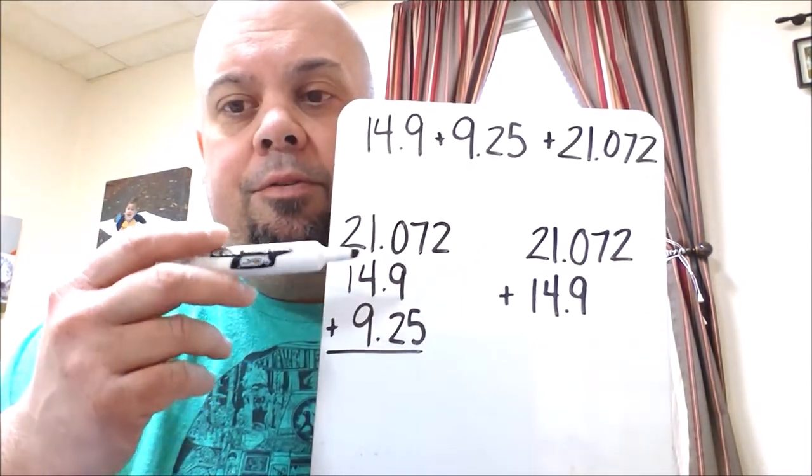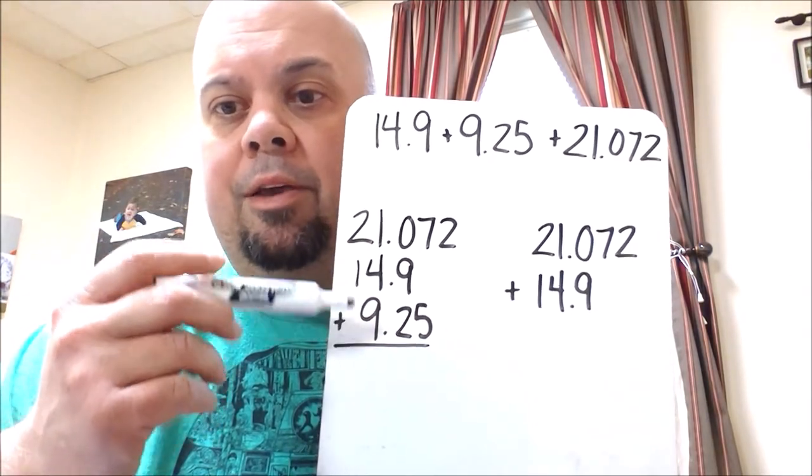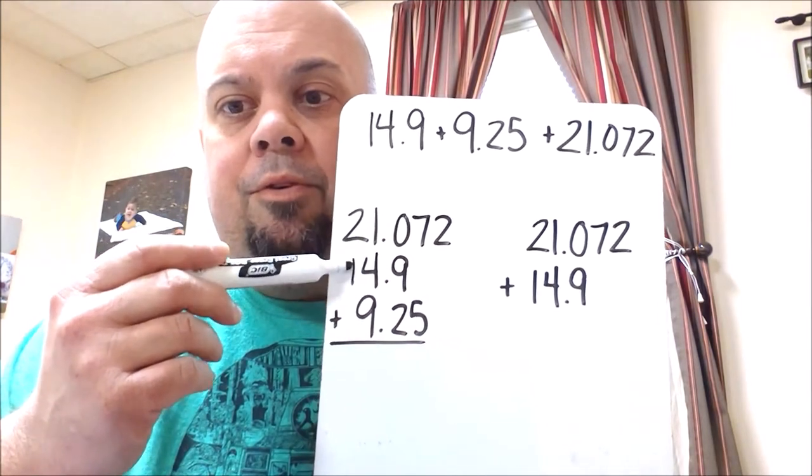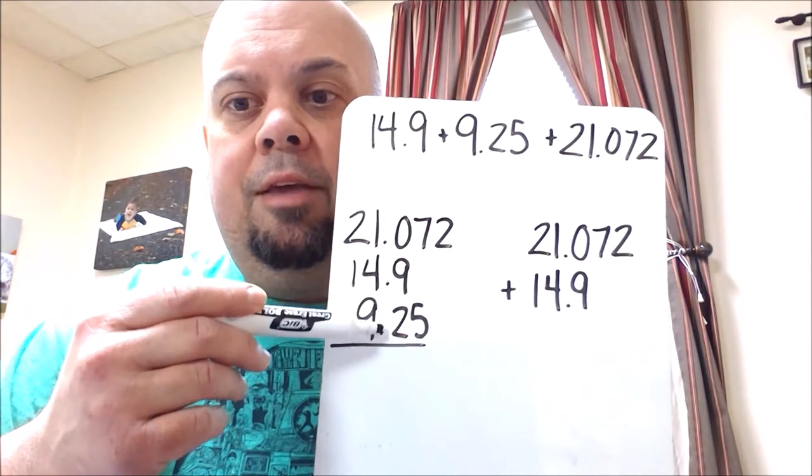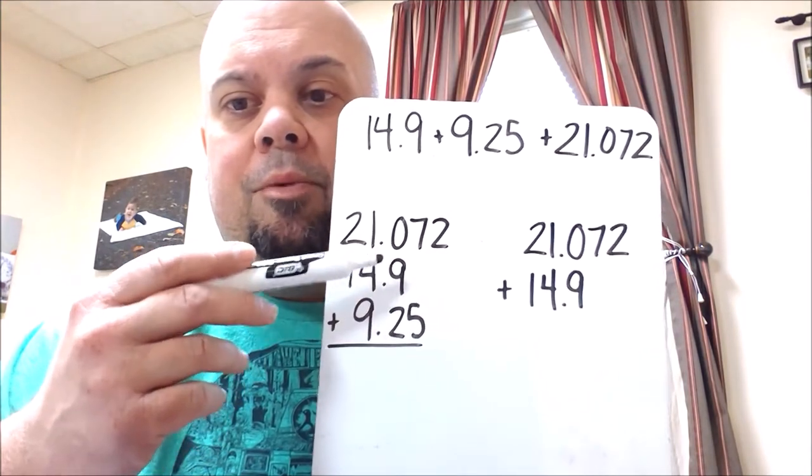You could stack all of your numbers. I would start with the biggest number and then go down in value. And notice how they don't line up. I've got my numbers over here. I've got tens with tens, ones with ones. All the decimals are in line. So you would want to line them up according to the decimal point.